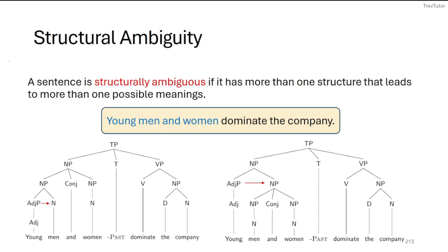So young men and women dominate the country. Now, there's two ways to interpret this. One is that it's just young men and then all women. So we can see this in the left tree where young is just modifying men. It's just modifying one noun. And then young men forms with women to make a compound.